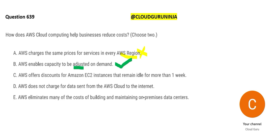Option C says that AWS offers discounts on EC2 instances that remain idle for more than one week — that is not true. AWS is there to do business. If you kept it idle for one week, that's like leaving your fan on for a week while on vacation. Will your electricity provider say they won't charge you because you were on vacation? No — if you used it, you will have to pay for it.